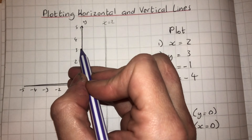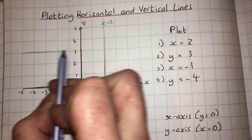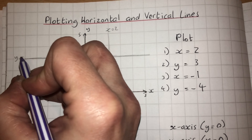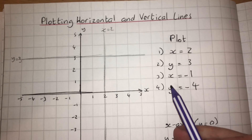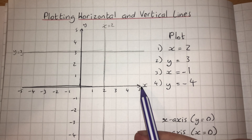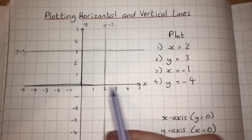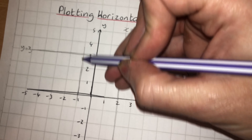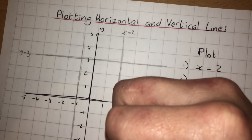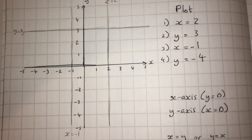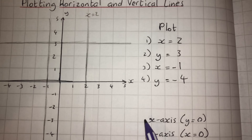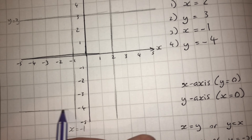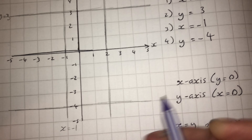For y equals 3, it's a line perpendicular to the y-axis going across — so that is the line y equals 3. It's good practice to label lines as you go. The third line is x equals minus 1: go to the x-axis, find where x is minus 1, and draw a perpendicular line there. The last line is y equals minus 4: go to the y-axis where y is minus 4 and draw a line going across at that point.